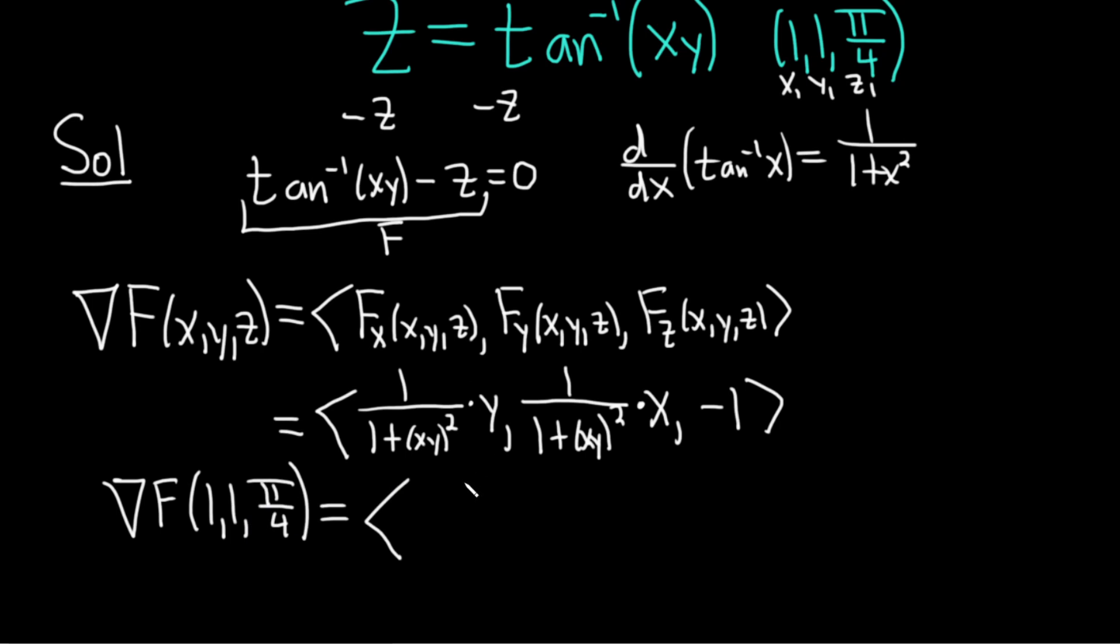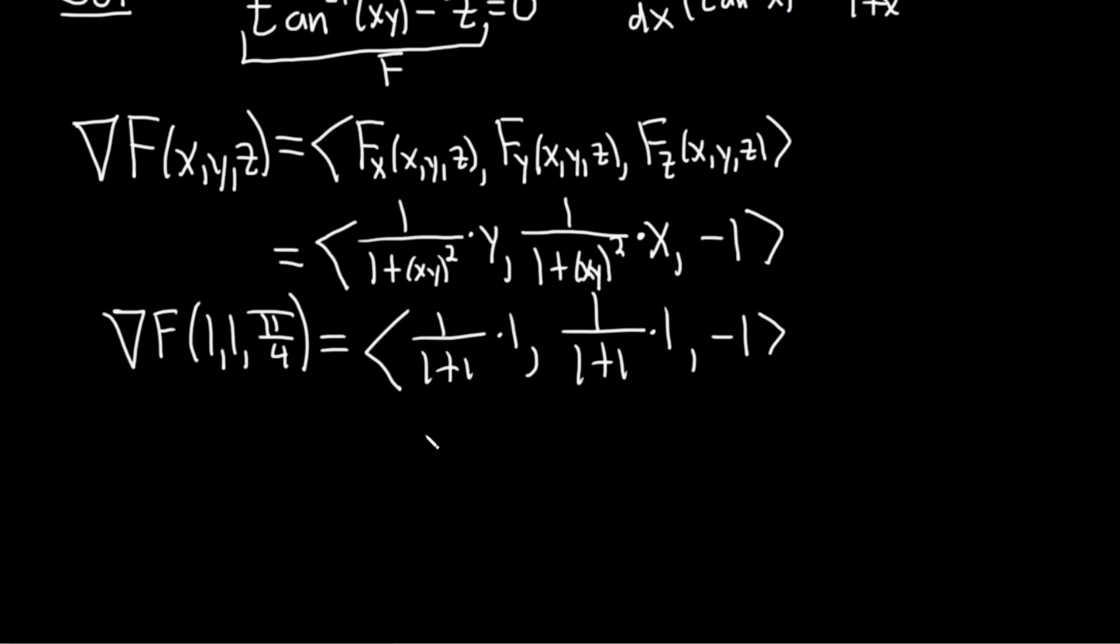That's equal to, let's see. We just have 1s and 1s. So it'll be 1/(1 + 1×1). That's pretty easy. And this is 1/(1 + 1×1). And this is negative 1. Yeah, because z1 never gets plugged in anywhere, right? So this will just be 1/2, 1/2, -1. And that's our a, b, c. Let me just switch colors here to emphasize that. This is our a, this is our b, this is our c.